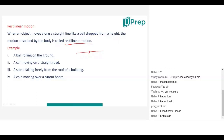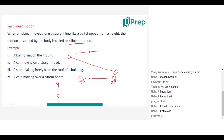A ball rolling on the ground will move in a straight line — that is translatory motion since the whole ball is moving from one point to another. A car moving on a straight road — the whole car moves, so it is also translatory, and since it moves along a straight line, it is also rectilinear. A stone falling from the roof of a building — that is also rectilinear. Rectilinear means moving in a straight line.